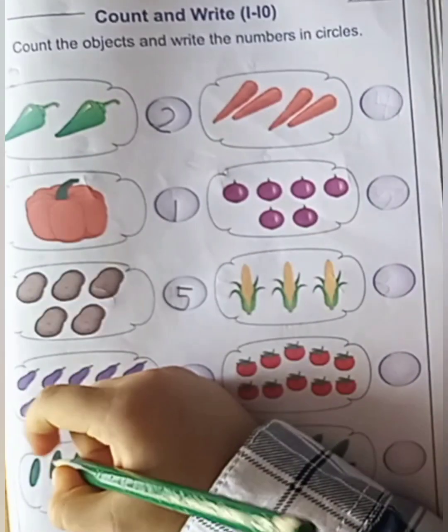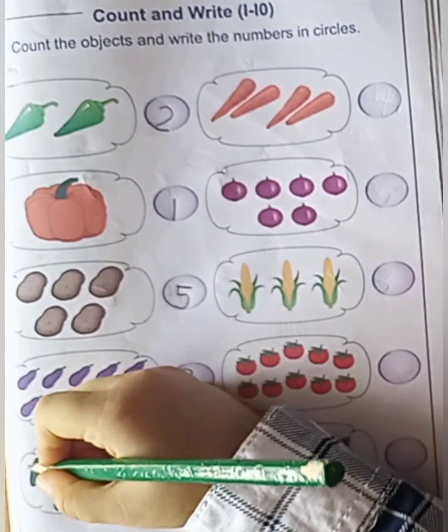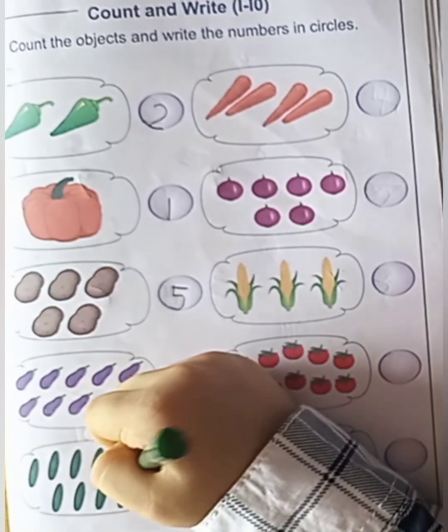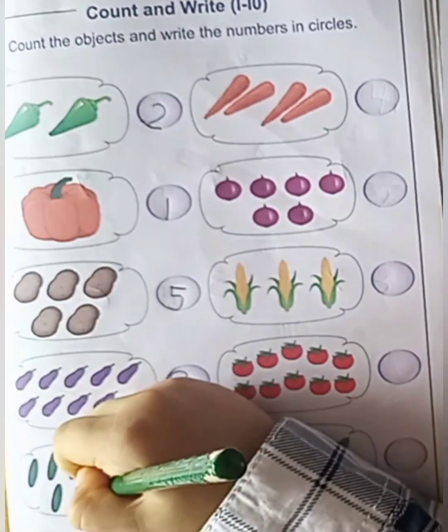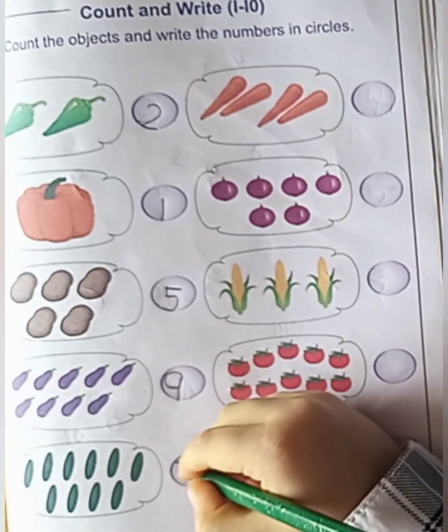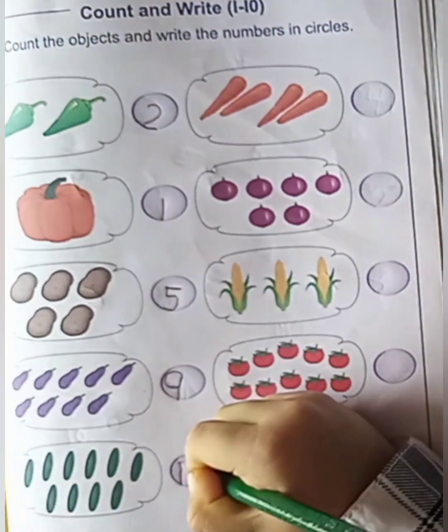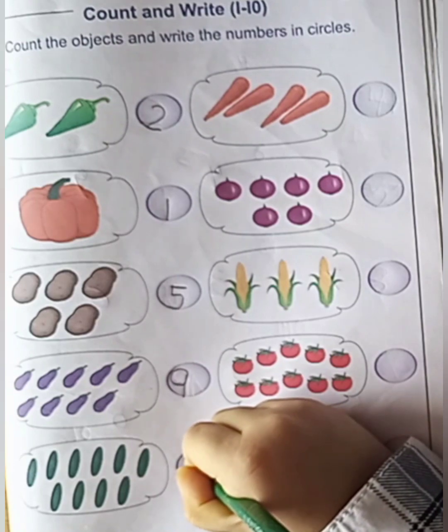Next. Cucumbers. One, two, three, four, five, six, seven, eight, nine, ten. Very good. How many cucumbers are there? Ten.